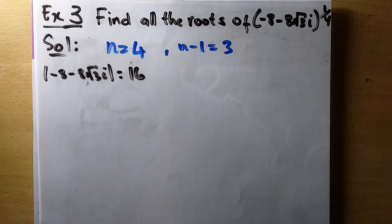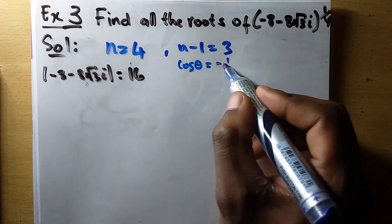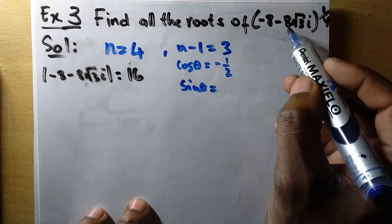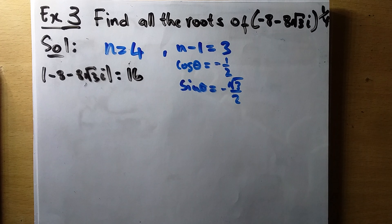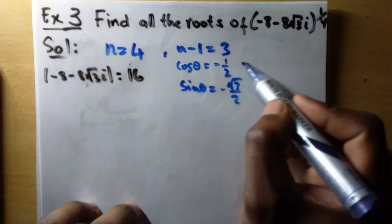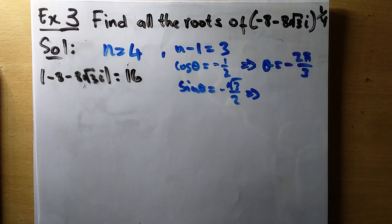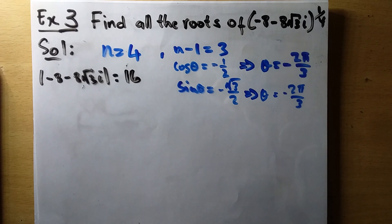Now the nice part: cos θ equals the real part divided by the modulus, which is -8/16 = -1/2. And sin θ equals the imaginary part divided by the modulus, which is -8√3/16 = -√3/2. In both cases θ is -2π/3, and both are negative.